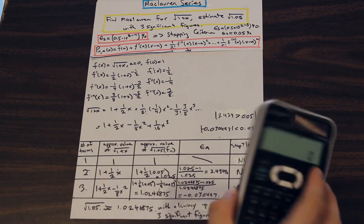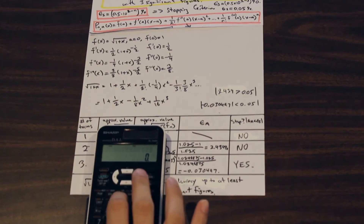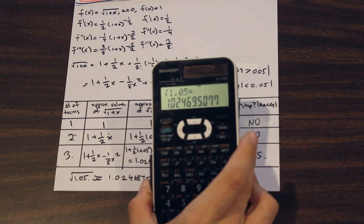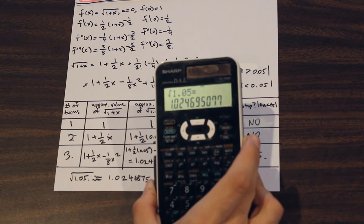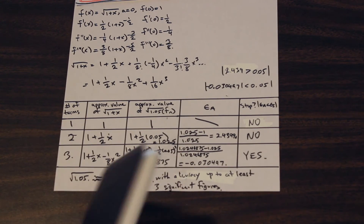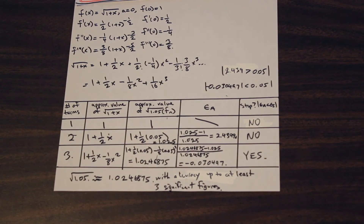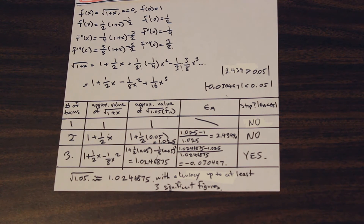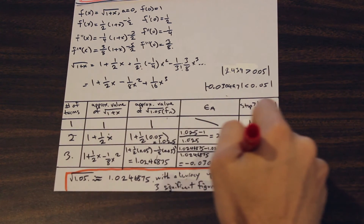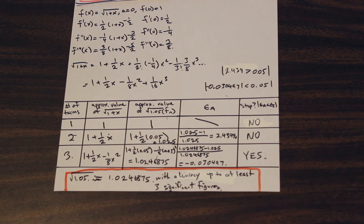And if we go ahead and plug that into the calculator just to show you — root 1.05 — we're going to get a value of 1.02469. So 1.0246 matches, and we know for sure that we have at least three significant digit values that are accurate. Thanks for watching guys, let us know if you have any other questions about this, and like and subscribe if you enjoyed the video.